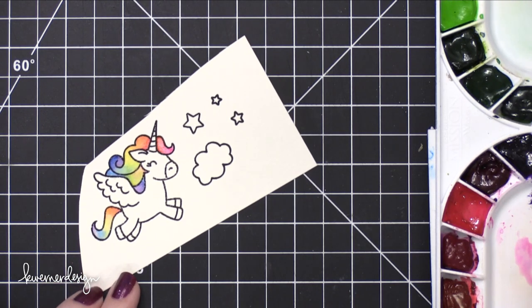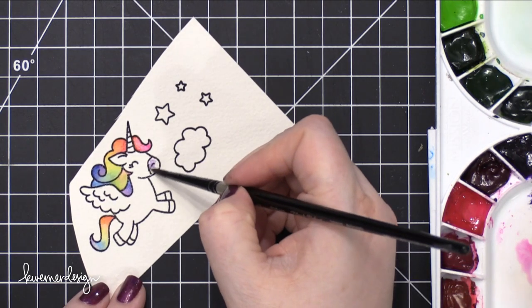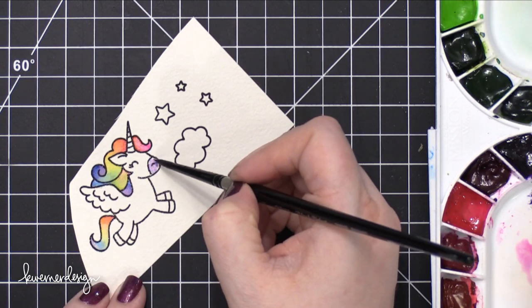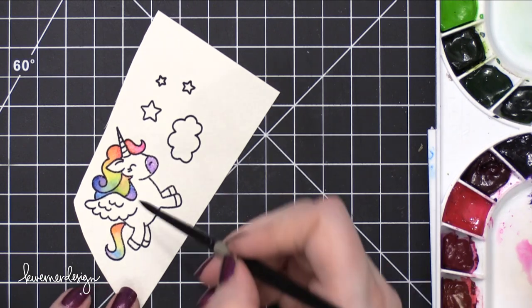So I'm going to bring in some pink on his cheeks, just to give a little bit of a blush. And I'm also going to paint the nose area and the hooves purple. So this is going to be a really cute little critter.